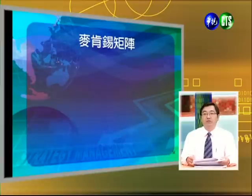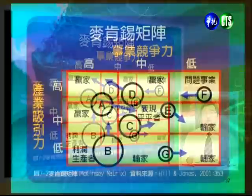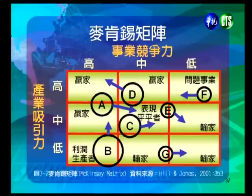從麥肯錫矩陣圖形可以看到，橫軸代表事業競爭力，縱軸代表產業吸引力。左上角三個區塊是贏家，右下角三個區塊是輸家，中間則包含問題事業、表現平平者以及利潤生產者。